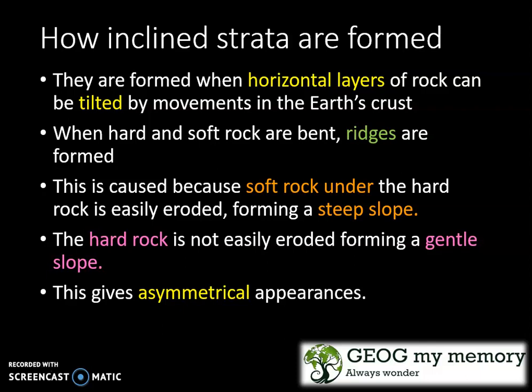Inclined strata are formed when horizontal layers of rock are tilted by movements in the earth's crust. When hard and soft rock are bent, ridges are formed. This is caused by soft rock under the hard rock being easily eroded, forming a steep slope.